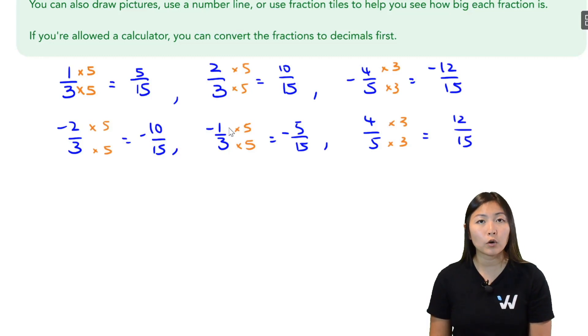Which one is the furthest to the left? Well, that's going to be the biggest looking negative number. And the biggest looking negative number here is negative 12 over 15, meaning that I have negative 4 out of 5 to the left of my order. It's the smallest number.